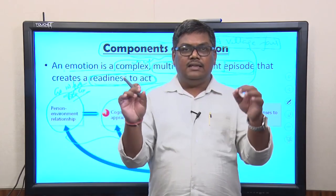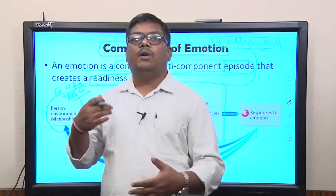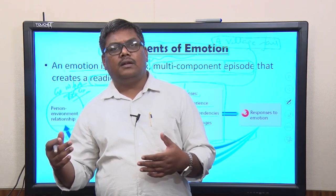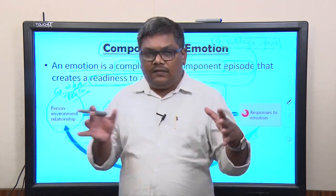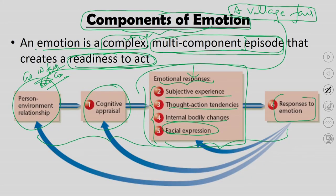With that, facial expression changes accordingly when you feel happy: your mouth widens, your eyes widen, your nose flares, the temple expands, teeth are displayed, and the body attains a posture associated with happiness. The last step is response to emotion — when you feel happy in the fair, you start acting accordingly: clapping, jumping up and down, talking loudly, enjoying, whistling, and all the things you do when happy. So emotion is a combination of all these steps.